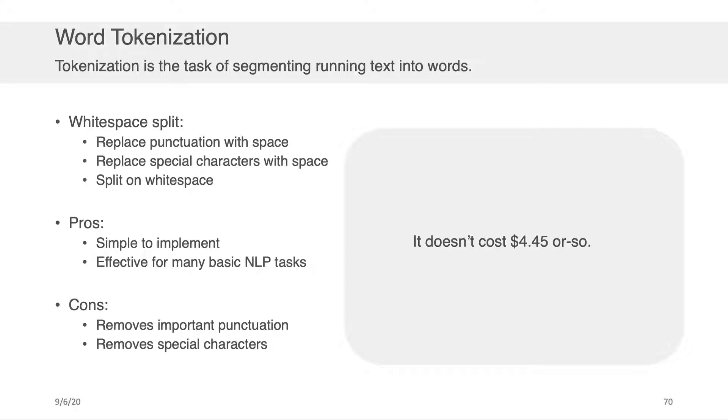So in the new example that we've got here on the right, we have a sentence that says it doesn't cost $4.45 or so. You can see that there's all sorts of special characters littered throughout here. There's a dollar sign, there's a clitic within doesn't, this symbol here, it's called a clitic. And then there is a hyphen that shows up between the words or and so at the end. Well, if we were to do a simple white space split on this, we would kind of mangle the sentence a bit, right?